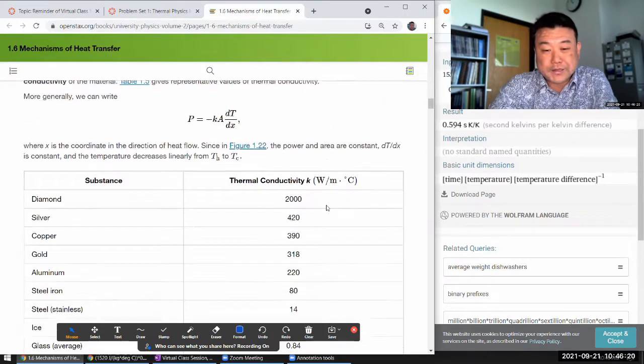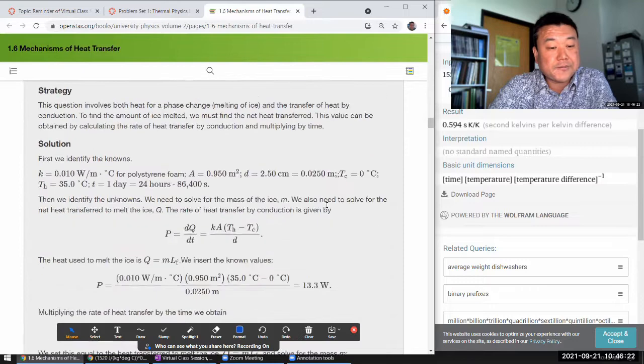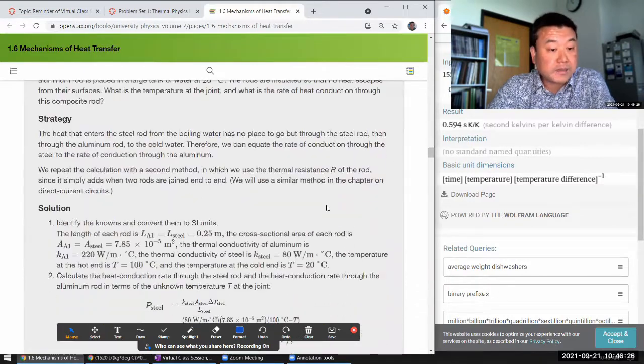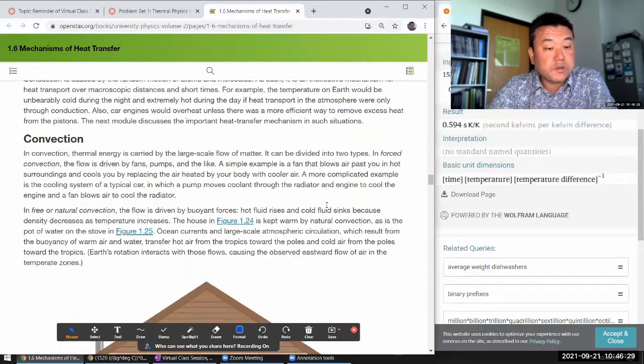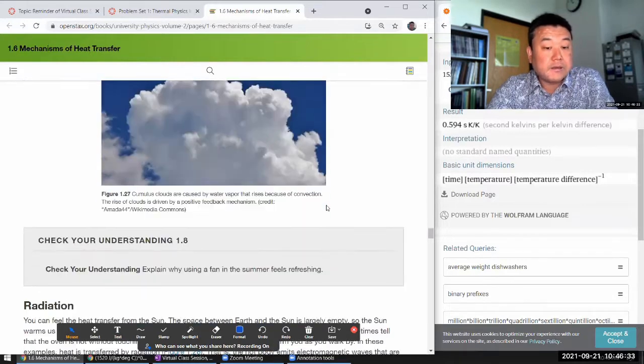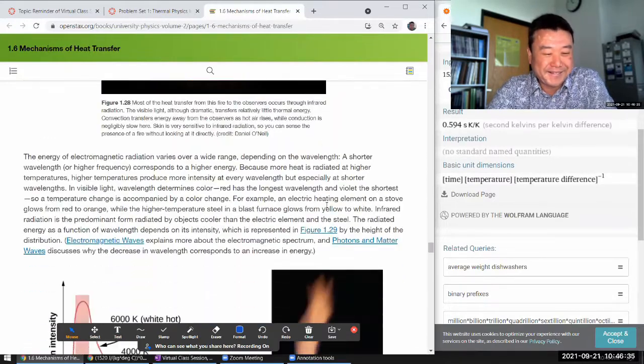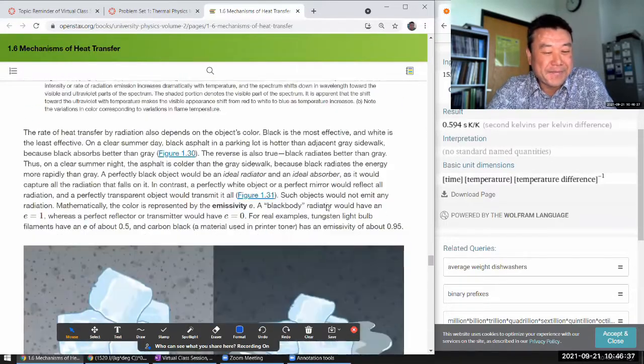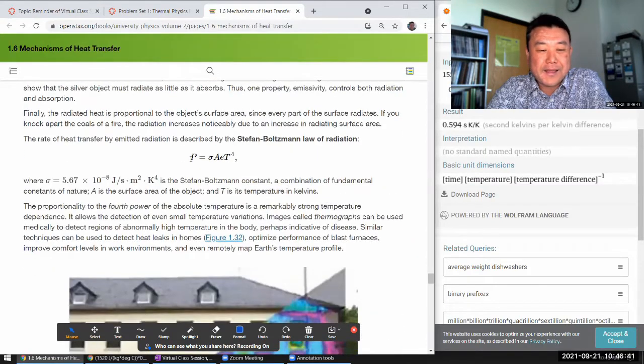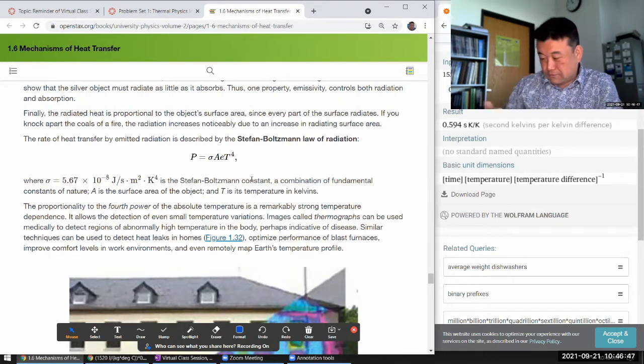One of which is that there's this thing called the Stefan-Boltzmann law, which relates the power of emitted radiation to the temperature of the thing. I think I'm almost there. Radiation. And there's a formula that's derived for you that relates this. And sigma is what's called the Stefan-Boltzmann constant. So this is something you have to know.